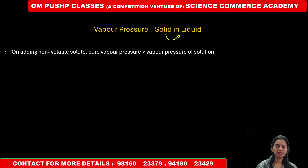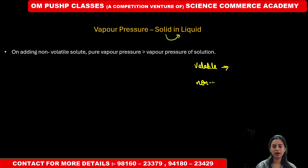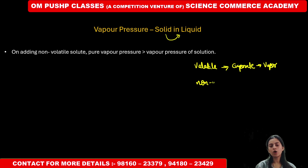A very simple thing — we have two types of substances: one is volatile and the other is non-volatile. Volatile substances are those which easily evaporate and easily become vapors, which is why they have vapor pressure. Non-volatile substances will not evaporate, so vapors will not form.